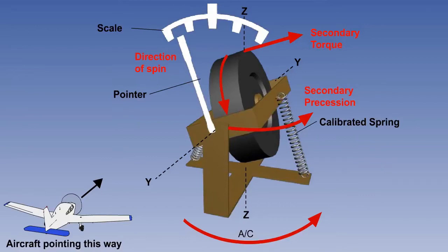When this state is reached, the gyro will be precessing about the vertical axis at the same rate as it is being turned, because it is attached to the aircraft and frame, and no further torque will be applied by the turning. This gives us a spring tension which is proportional to the rate of turn of the aircraft.